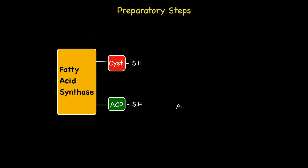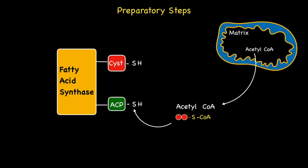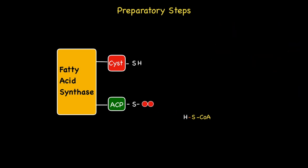Before chain elongation can begin, fatty acid synthase needs to undergo a number of preparatory steps. The first involves the attachment of a two-carbon unit from acetyl-CoA to the thio functional group located on the ACP component of fatty acid synthase. This acetyl-CoA originated from the matrix of mitochondria and was transferred across into the cytosol via the citrate malate shuttle system. So, during this first preparatory step, the two carbon units found on the acetyl-CoA are transferred to the thio functional group located on the ACP component of fatty acid synthase.